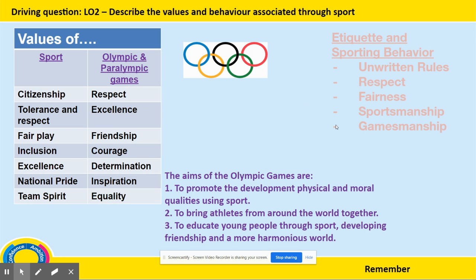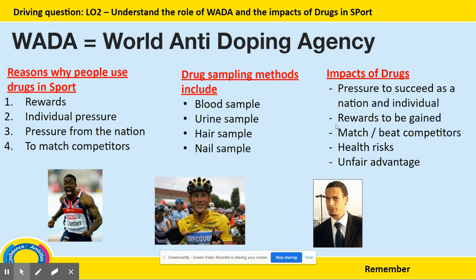LO 2 — you'll start to look at the values of sport, specifically the Olympic and Paralympic values and the aims of the Games. You'll also look at sportsmanship and gamesmanship and the difference between the two, how they are implemented in elite sport and amateur sport, and how the values of sport are evident throughout elite and amateur sport.